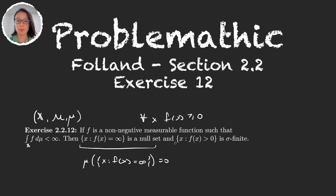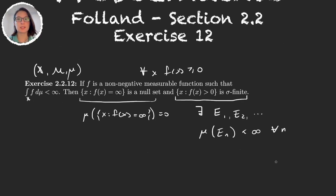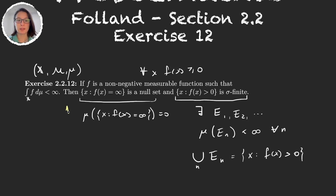Let's remember what sigma-finite means. It means that there exist some sets, let's call them E₁, E₂, and so on — a countable family of sets with finite measure — whose union forms the entire set. In this case, the set where the function is positive, so the union over all n of Eₙ has to equal the set we want to prove is sigma-finite. We have to prove these two things; let's start with the first one.